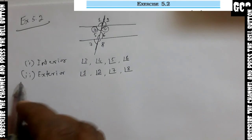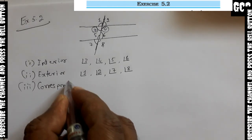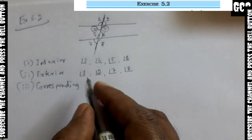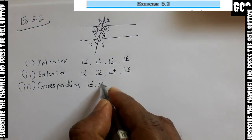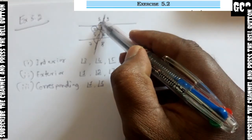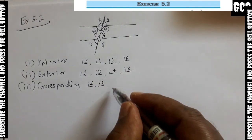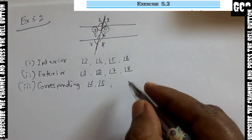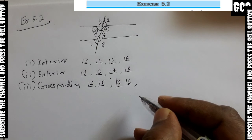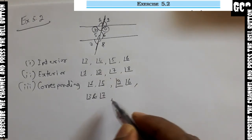The third one is corresponding angles. Corresponding angles: angle 1 and angle 5 are corresponding angles — they always have the same measurement. If one is 110 degrees, the other is also 110 degrees. The next corresponding pair is angle 2 and angle 6.